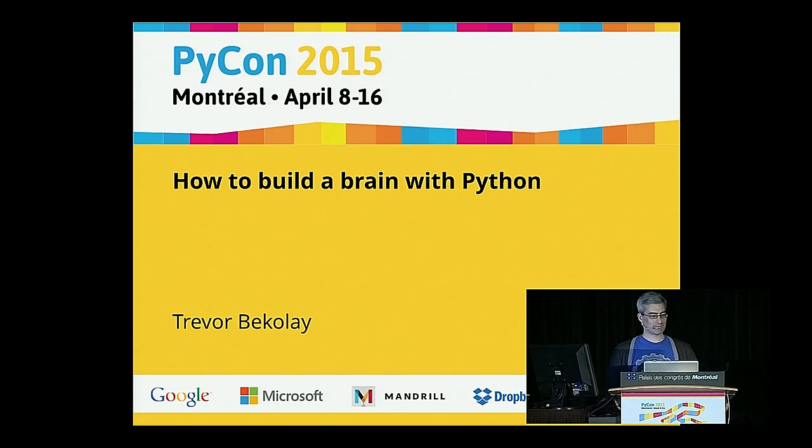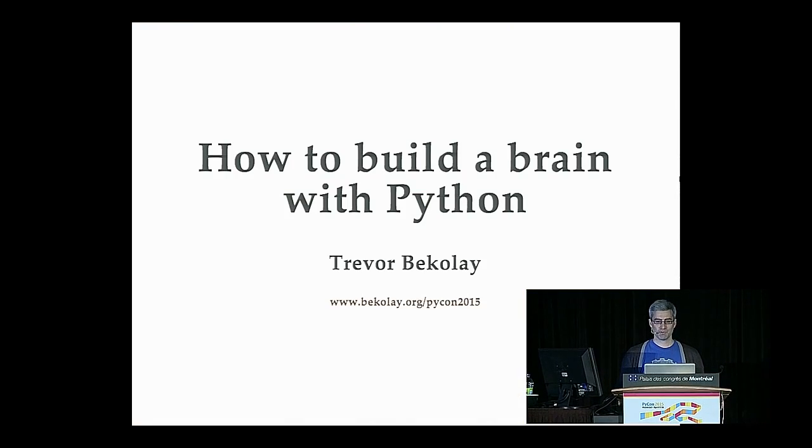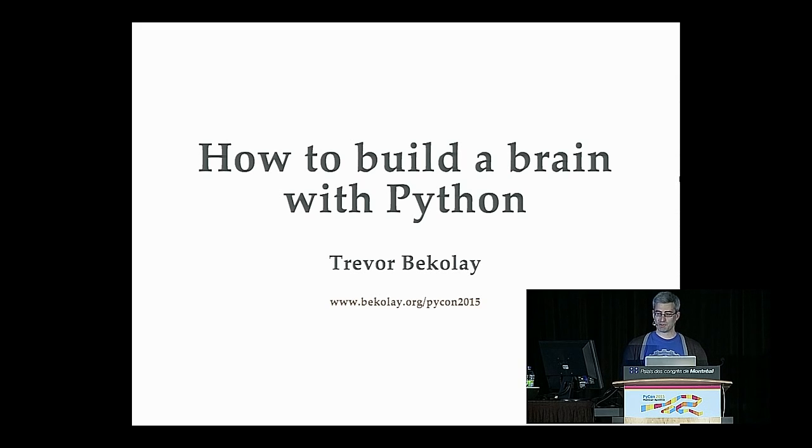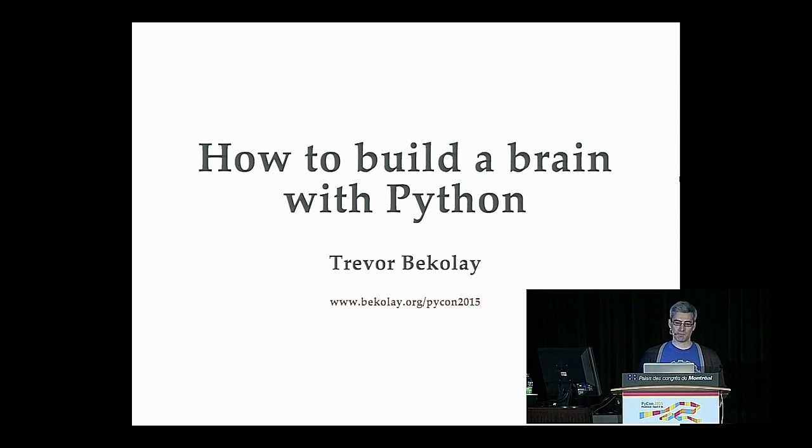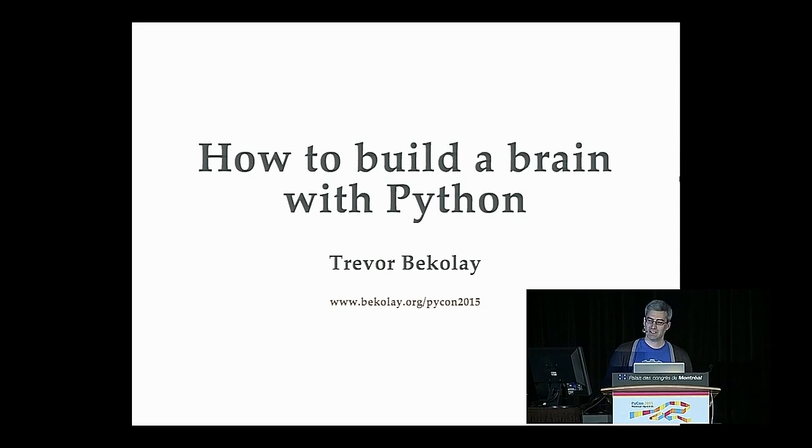Thanks. So today, I want to tell you about your own brain. So the human brain, it's really an incredible computing device. It weighs about two kilograms. It's composed of 86 billion neurons and about a quadrillion connections between those neurons. It consumes only about 20 watts of energy. And yet, it's responsible for everything that humans have created.